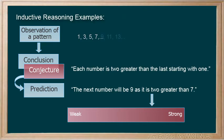Or would our conjecture strengthen if the pattern were extended to include 9, 11, and 13? Certainly. The more samples or data that supports the conjecture, the stronger the argument we can make that the conjecture is true.